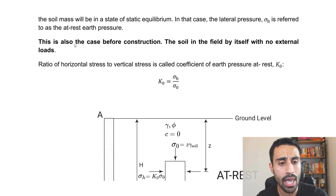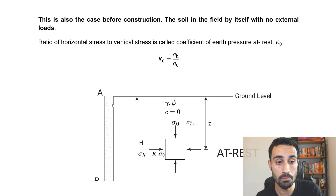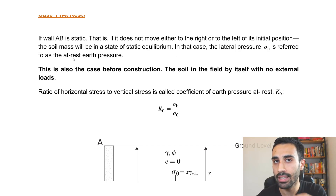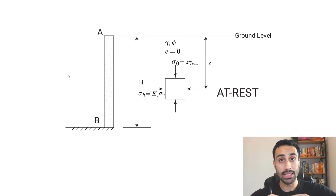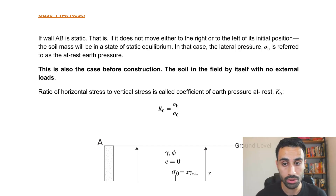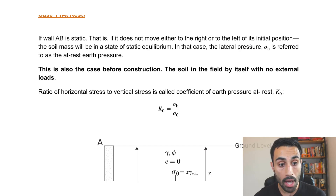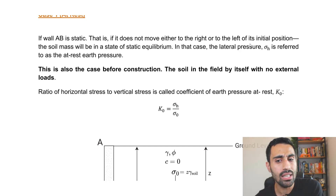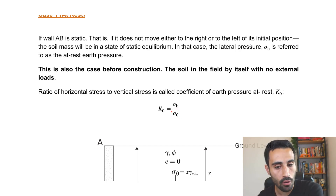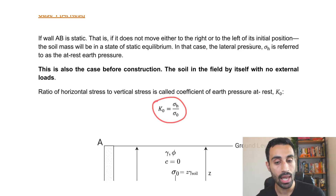Case 1 is the at-rest case. Let's say we have a wall AB that is static — it does not move either to the left or to the right from its initial position. The soil mass behind the wall is in a state of static equilibrium. In that case, the lateral pressure, sigma sub H, is referred to as the at-rest earth pressure, and we use the K-naught coefficient. This is the condition before construction — soil in the field by itself with no external loads.